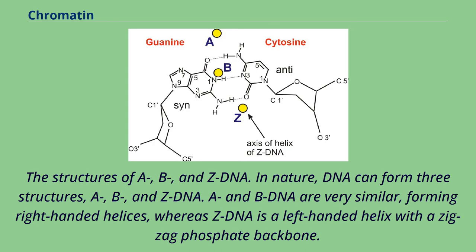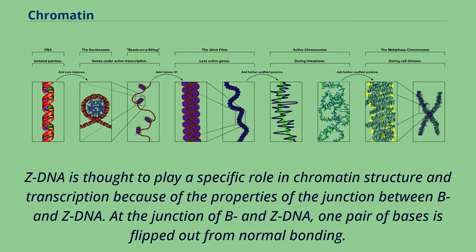The structures of A, B, and Z DNA. In nature, DNA can form three structures: A, B, and Z DNA. A and B DNA are very similar, forming right-handed helices, whereas Z DNA is a left-handed helix with a zigzag phosphate backbone. Z DNA is thought to play a specific role in chromatin structure and transcription because of the properties of the junction between B and Z DNA.